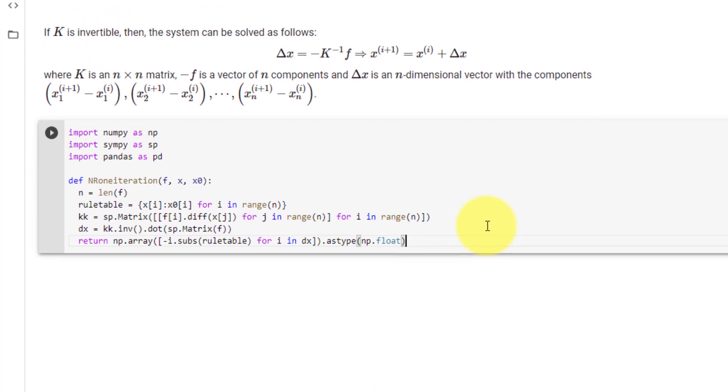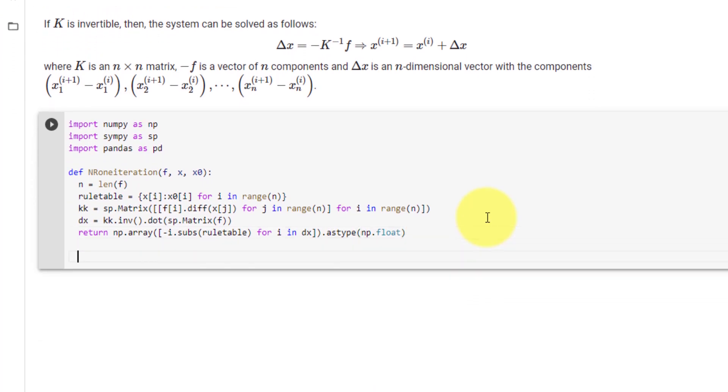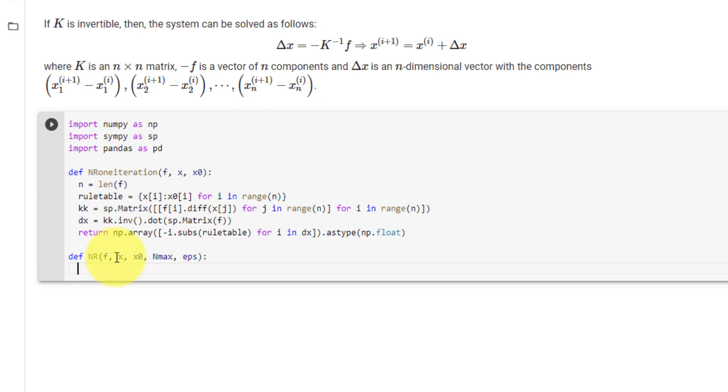Now that we have our function for delta x, we will declare our main function and call it nr. Here we will need the inputs f, a list of all of our equations, x, a list of our symbols, x naught, a list of our initial guesses, nmax, the maximum number of iterations, and eps, our stopping error.